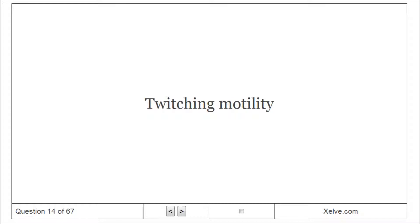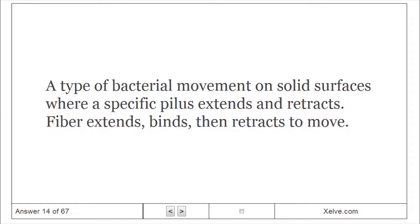Twitching motility is a type of bacterial movement on solid surfaces where a specific pilus extends and retracts. The fiber extends, binds to a surface, then retracts to move the cell.